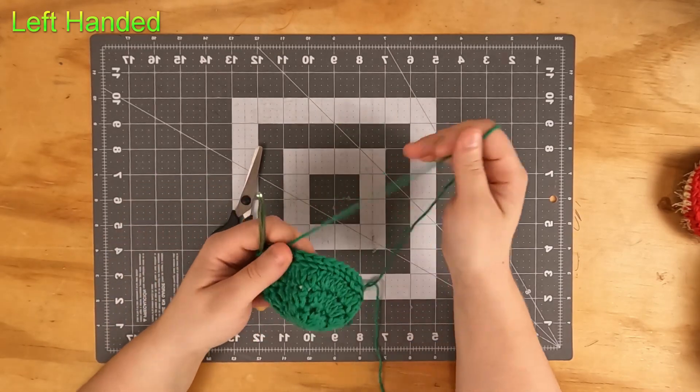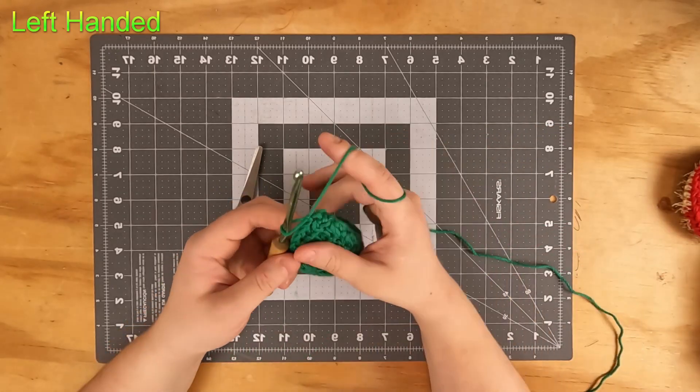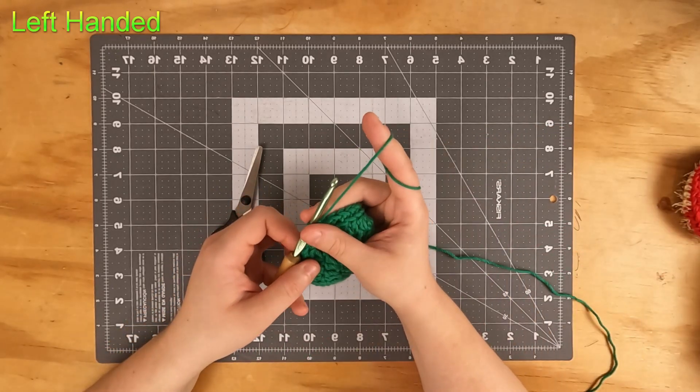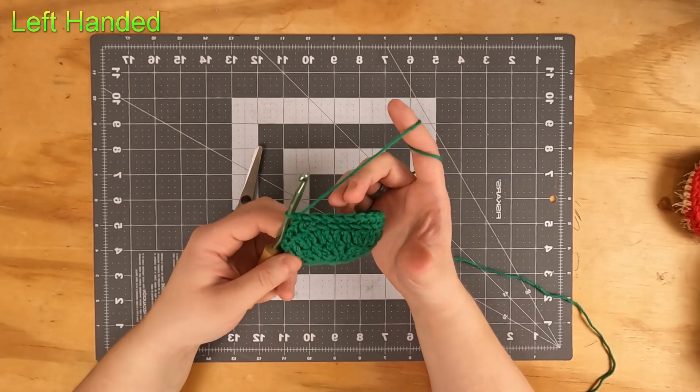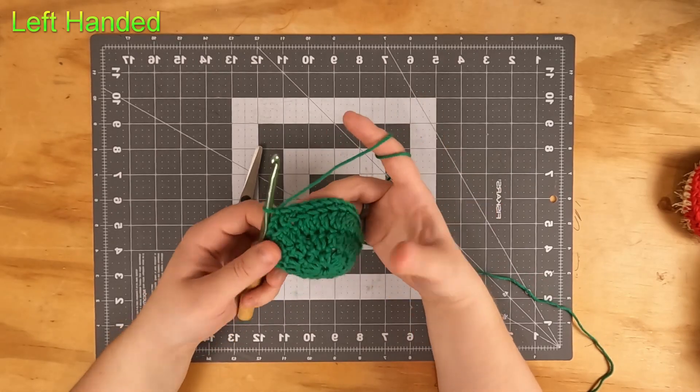This is a great spot to tie off your yarn so that you can start with your scrubbing yarn. If you prefer not to have to tie off, you can actually just basically do a color change, but instead of a color change you're doing a yarn change from the cotton to the scrubby.